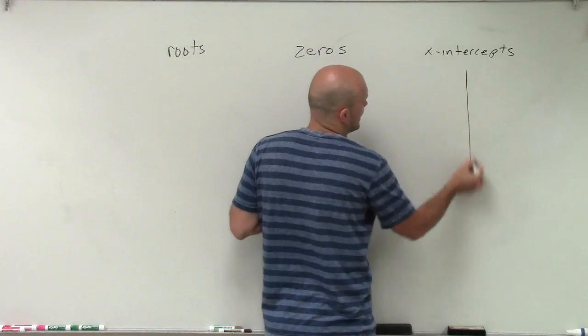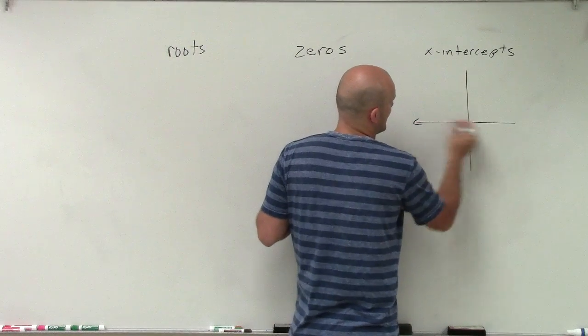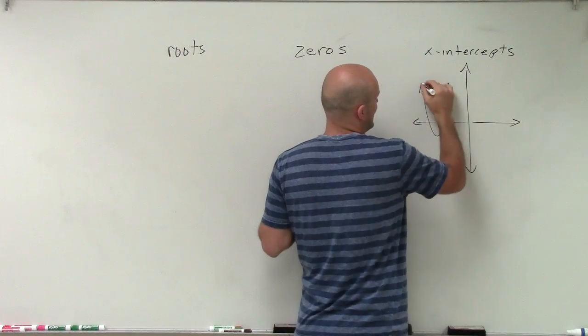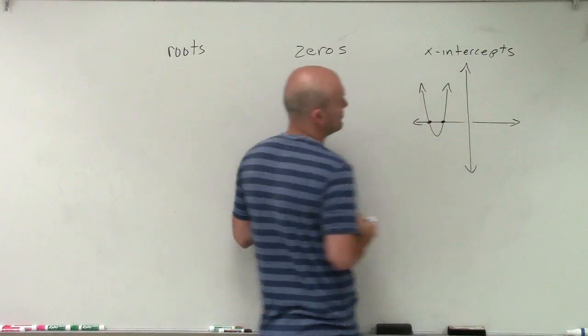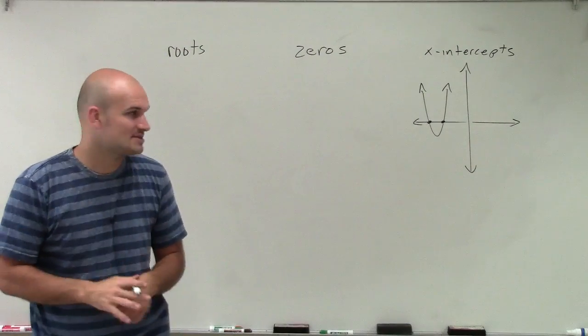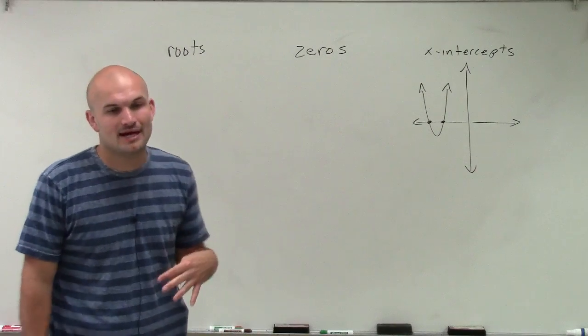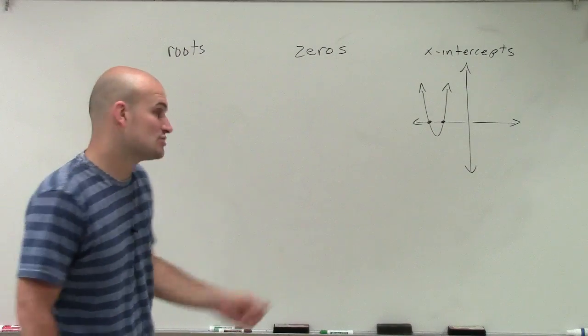Primarily, when we're talking about x-intercepts, we're just looking at where a graph crosses the x-axis. In this example, I have two x-intercepts. The roots and the zeros mean the exact same thing, but a lot of times we're going to represent them when we're looking at it algebraically.